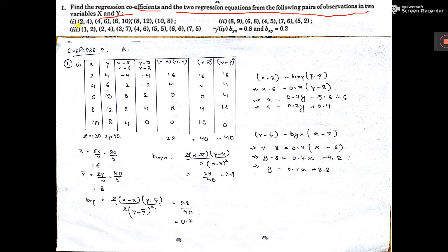So first, I am entering the data now. The values 2, 4 — here I have written 2 and 4 — because this is the value of x and this is the value of y. Similarly 4, 6 and so on. All x values go in the first column and y values in the second column. These are the values of x and these are the values of y.